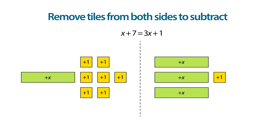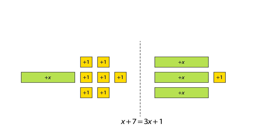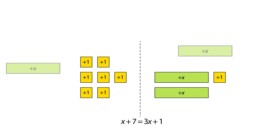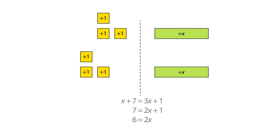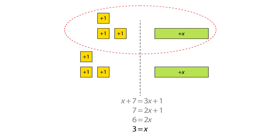Subtracting terms from both sides of the equation can be shown by removing tiles. It is important to see how the equation changes as this happens. We can remove an x term from each side and write the new equation below. We can also take one from both sides and write the new equation. The final step is to arrange the tiles into two equal groups, 2 being the number of x's. This shows a solution of x equals 3.